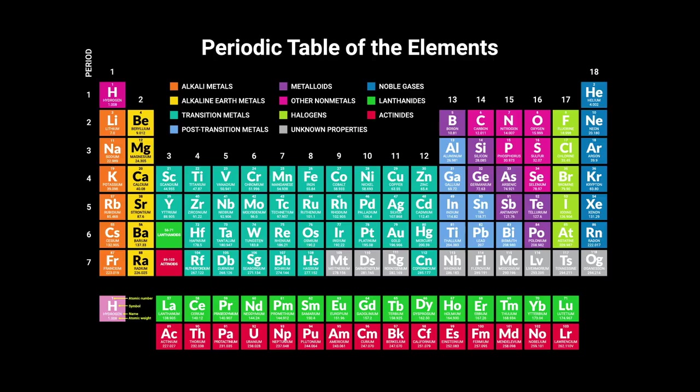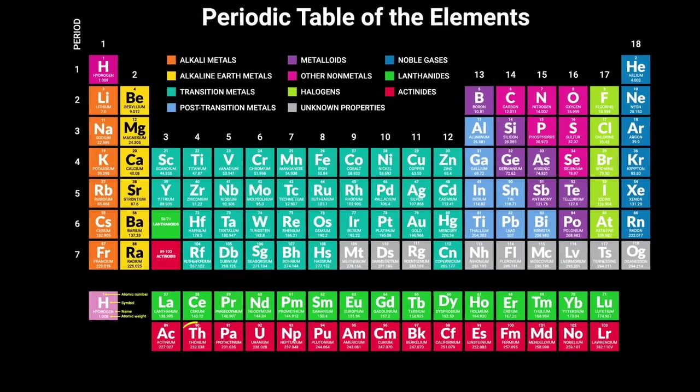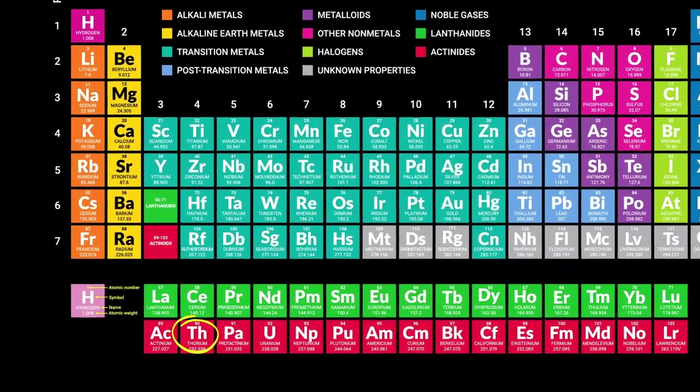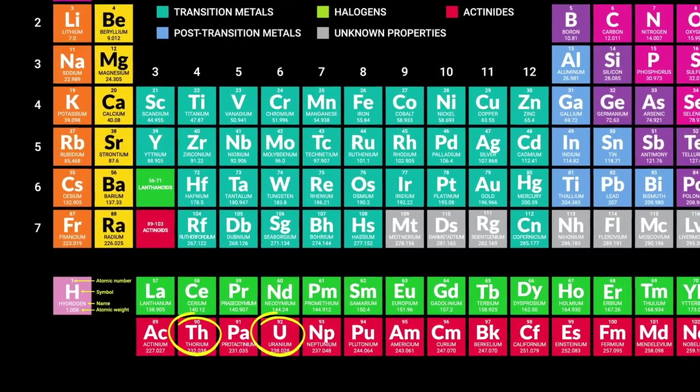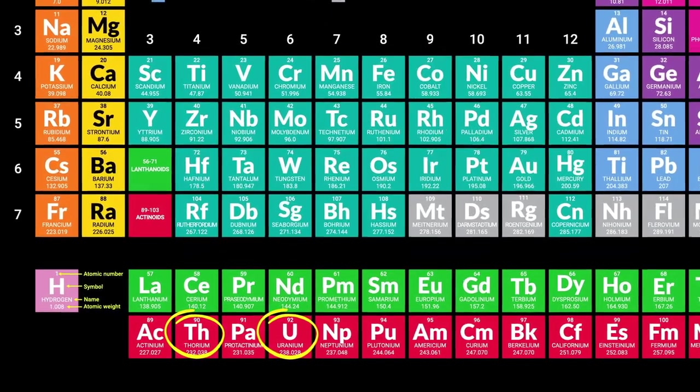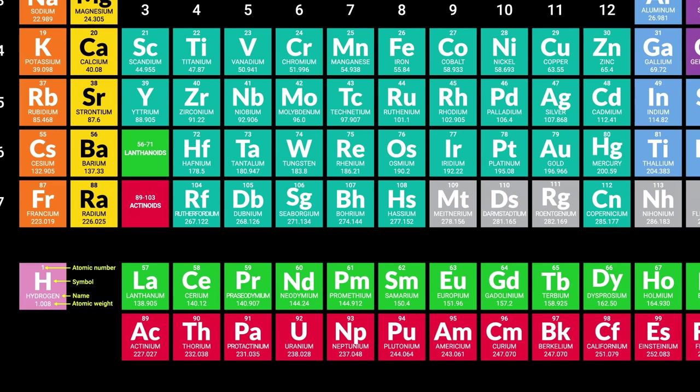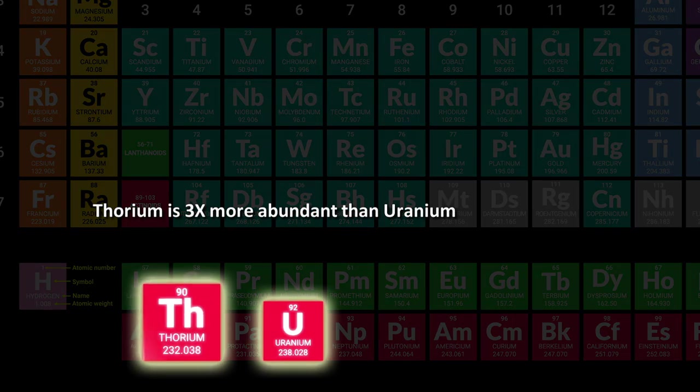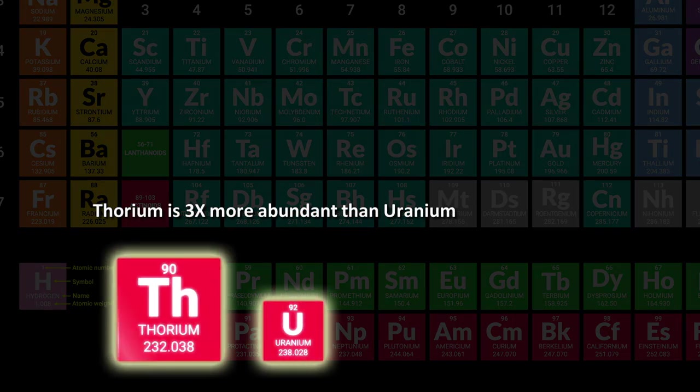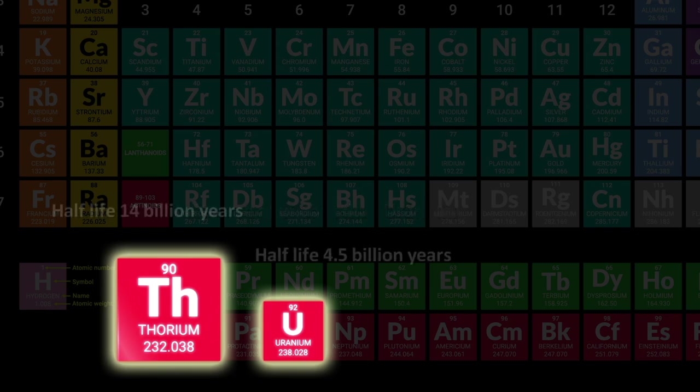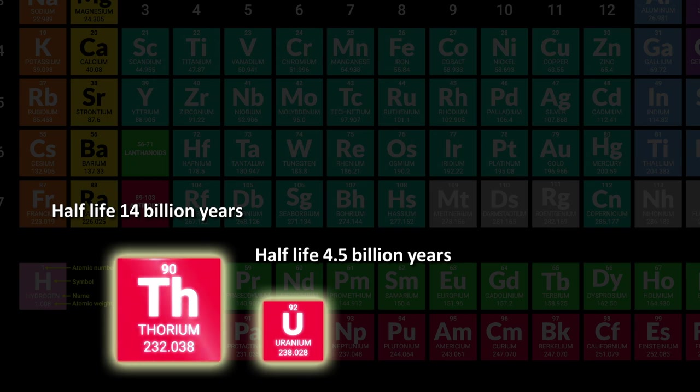But thorium is different. Thorium is element number 90, so it is a slightly lighter element than uranium, which is element 92. First, it is much more abundant than uranium. In fact, we have more than three times more thorium on earth than uranium. One reason we have more is because it is more stable than uranium, with a half-life of 14 billion years, compared to the most stable uranium having a half-life of 4.5 billion years. So it simply lasts longer before decaying.